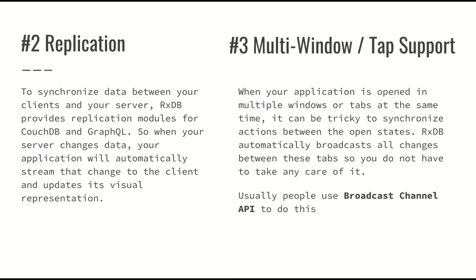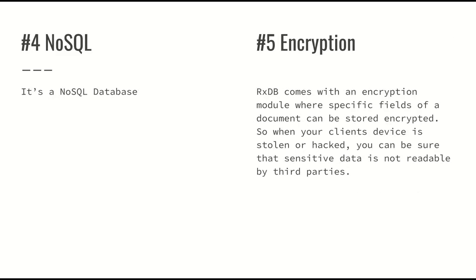Feature number four: RxDB is a NoSQL database, so we have collections. Feature number five is encryption — RxDB comes with an encryption module where specific fields of a document can be stored encrypted. So if your client's device is stolen, you can be sure that sensitive data is not readable by third parties. That's a nice feature.